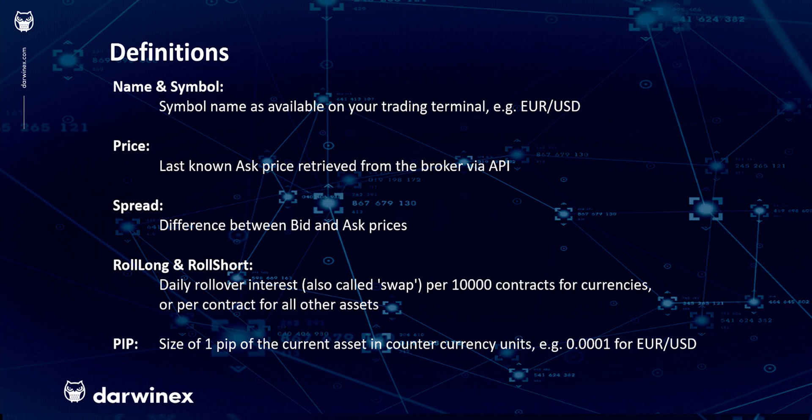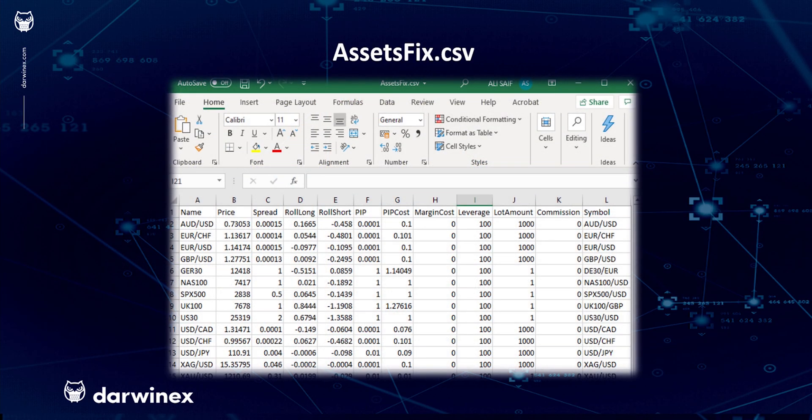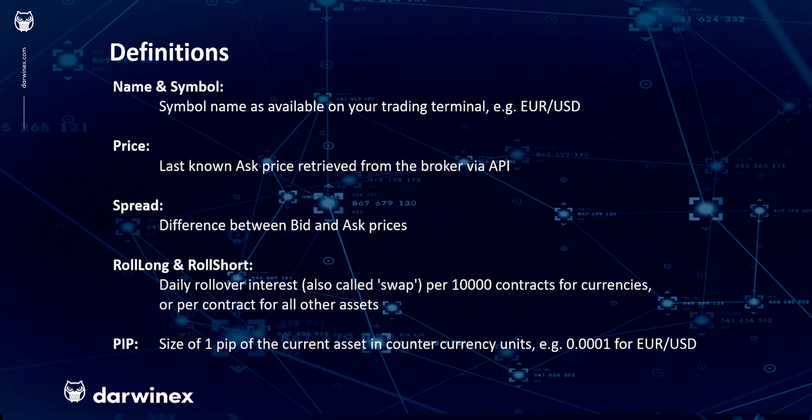Roll long and roll short are the daily rollover interest, also called swap, per 10,000 contracts for currencies. This is important to note: the swap rates shown on the DarwinX website are per contract and cannot be inserted directly into your assetsfix.csv file. They must be adjusted to represent the swap calculated per 10,000 units of account currency for FX, or per contract for all other assets — we'll go through this in the demonstration.